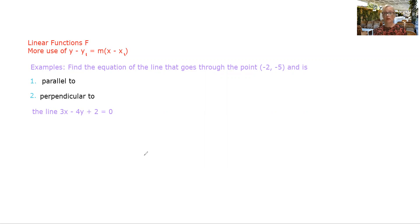We've got an example here that I'll go through with you now. The question says find the equation of the line that goes through the point (-2, -5). First, we want it parallel to the line 3x - 4y + 2 = 0, and secondly we want to find the one that's perpendicular to that line.